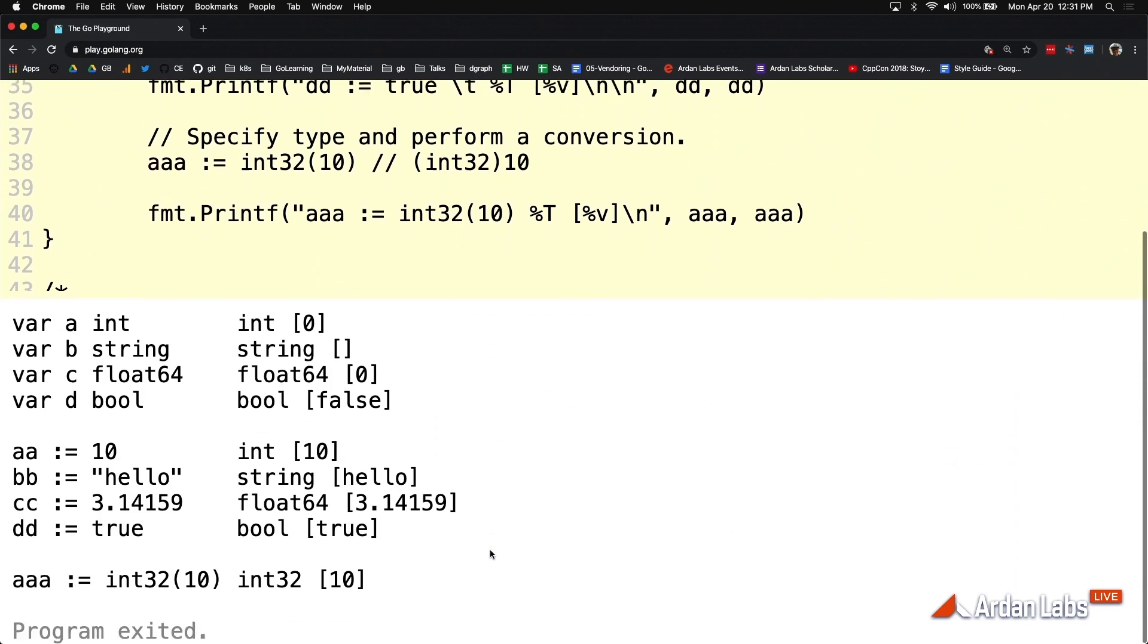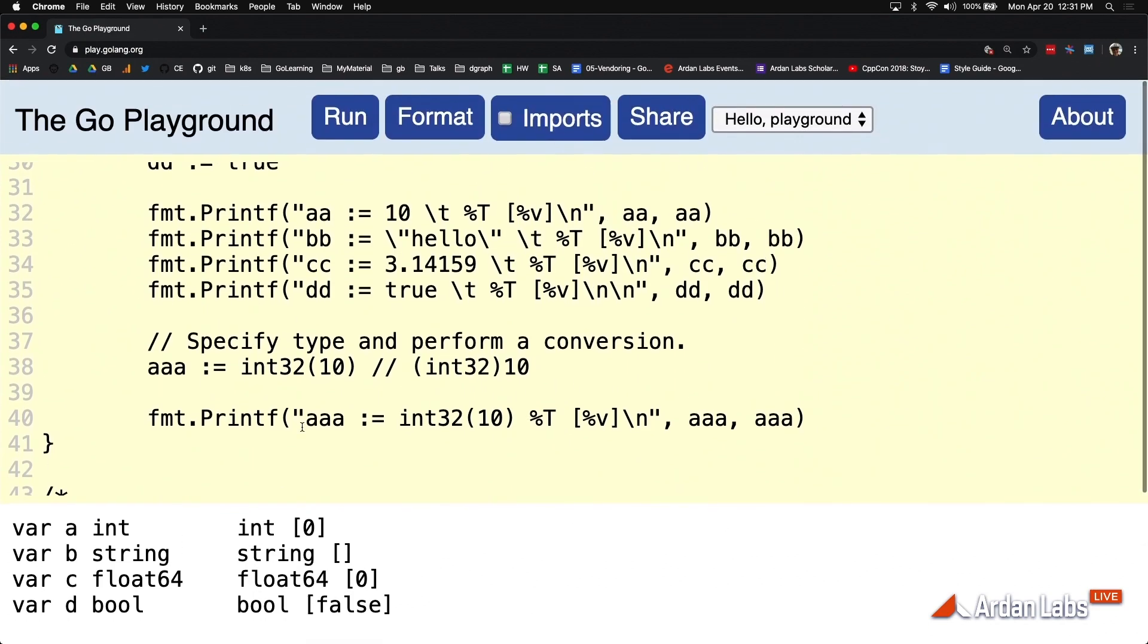If I run this code in the playground, you'll see here that we're getting basically the zero value for these variable declarations, and we're getting something other than zero value here.